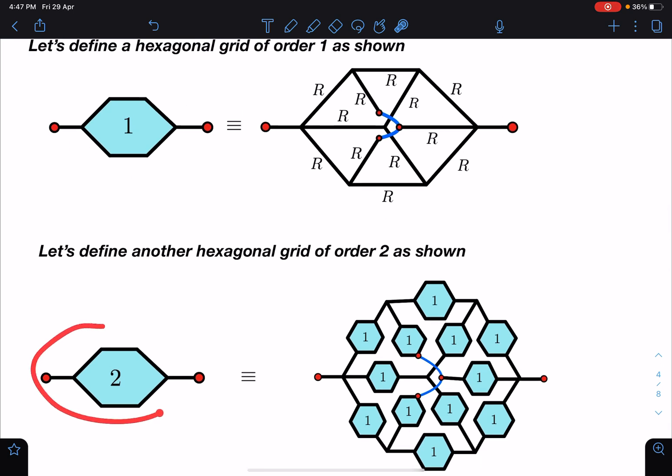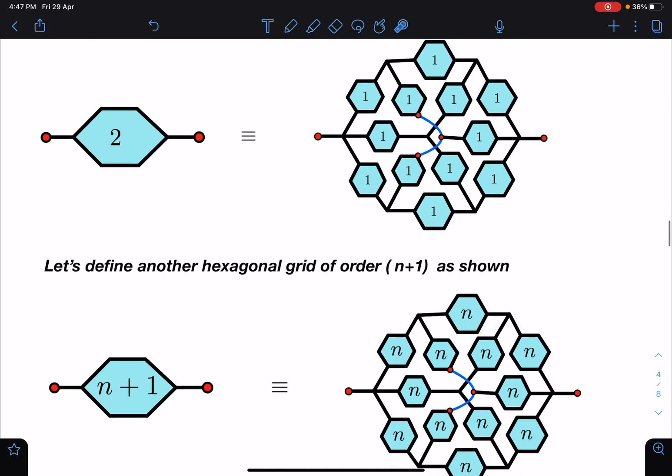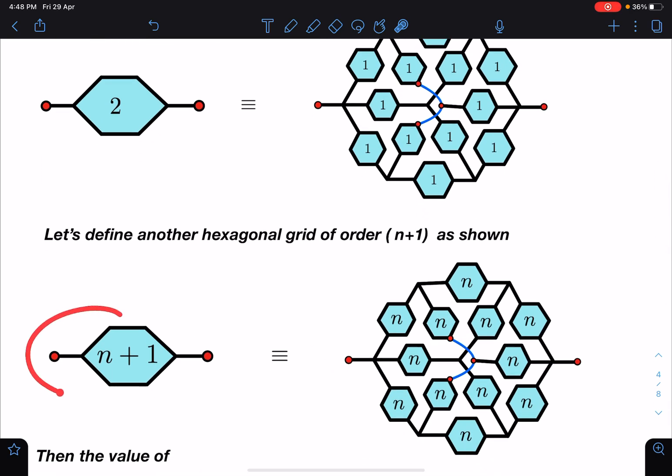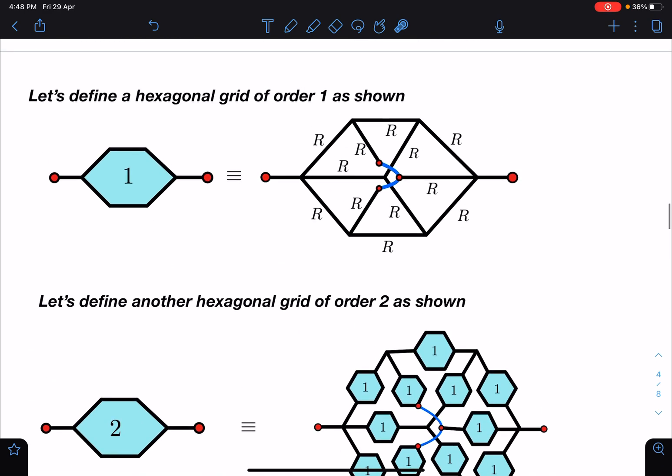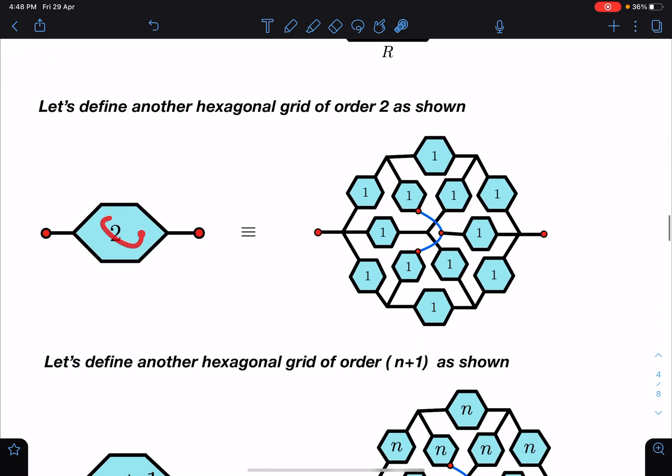Now when I'm writing 2, these resistances of R will be replaced by this unit as you can see here. Similarly when I'm writing nth order or n+1th order, all these resistances will be replaced by nR.